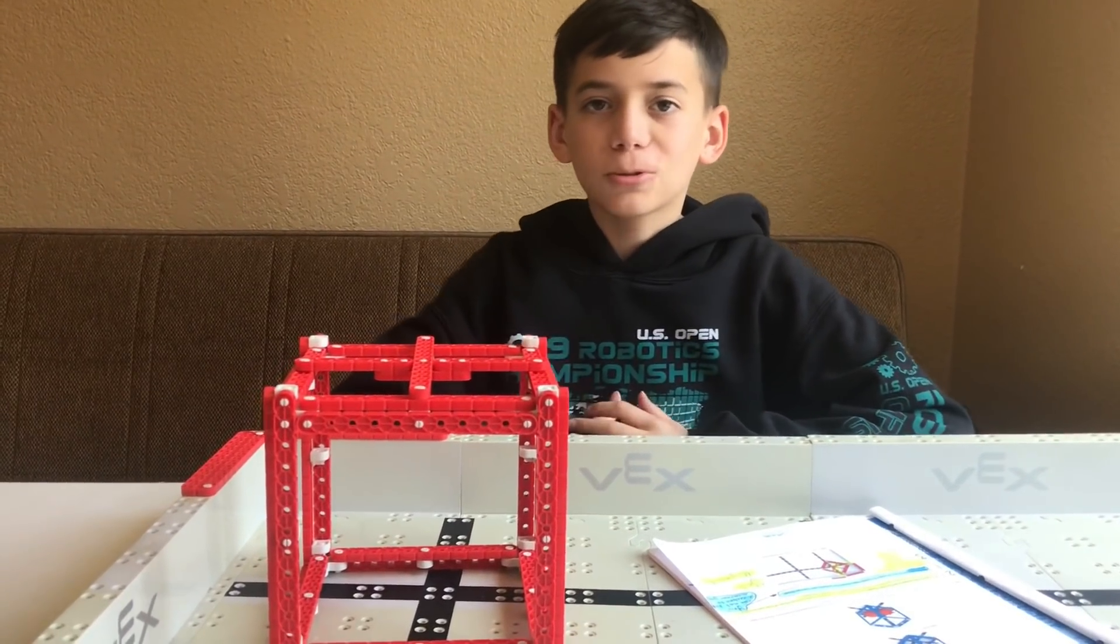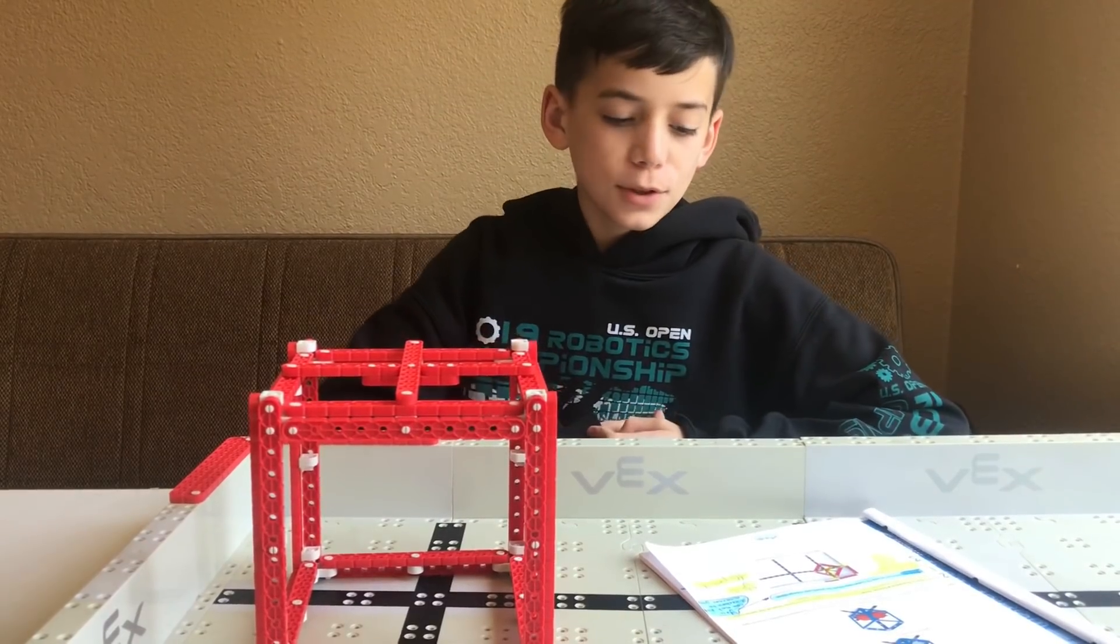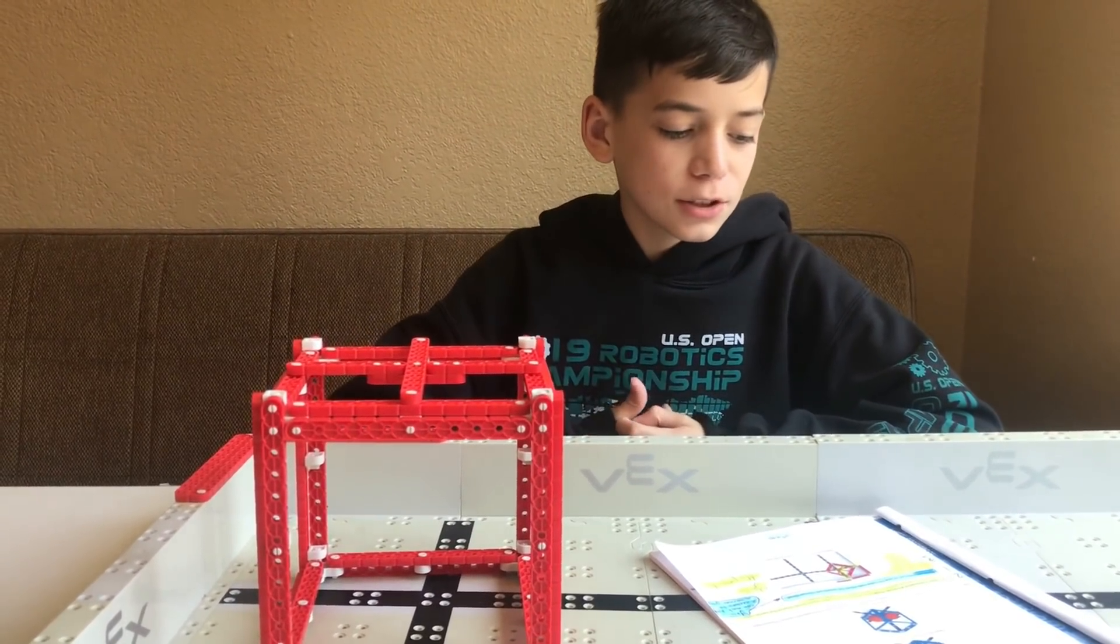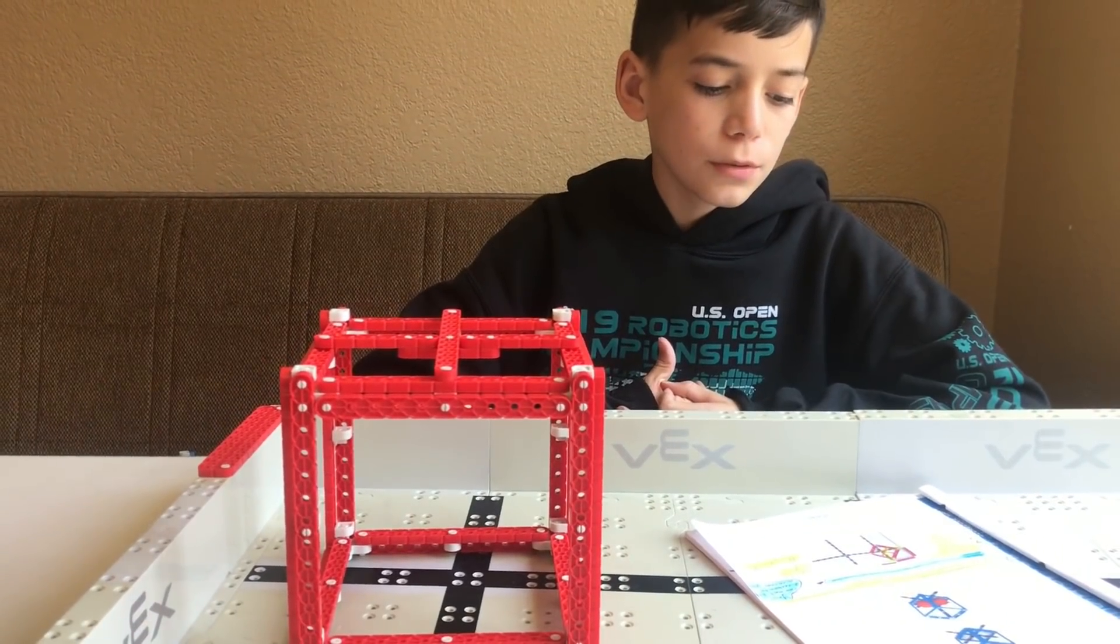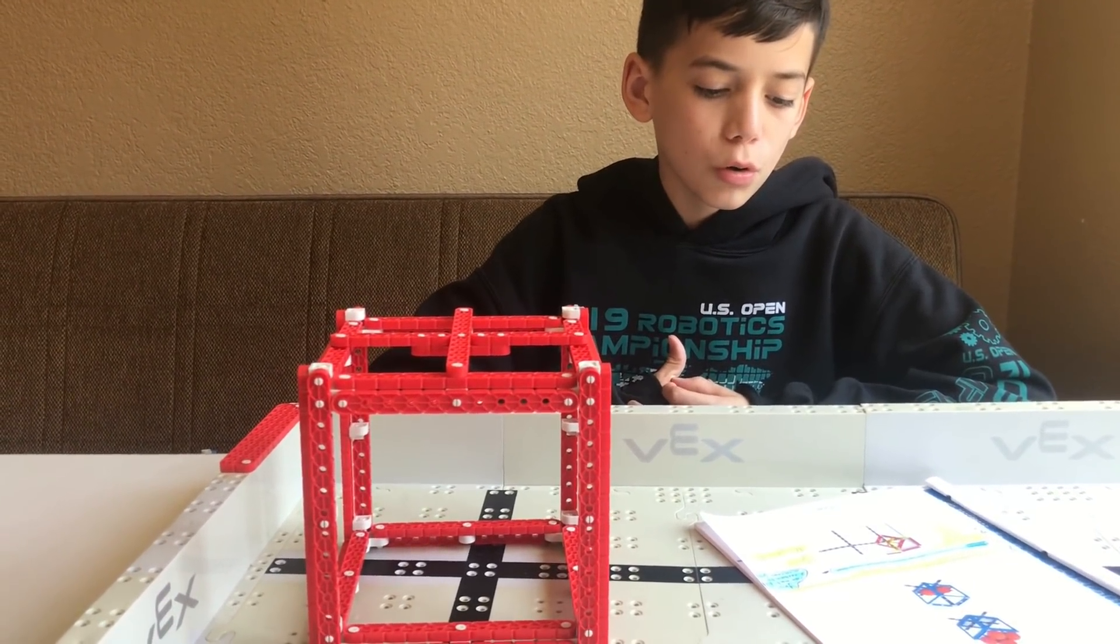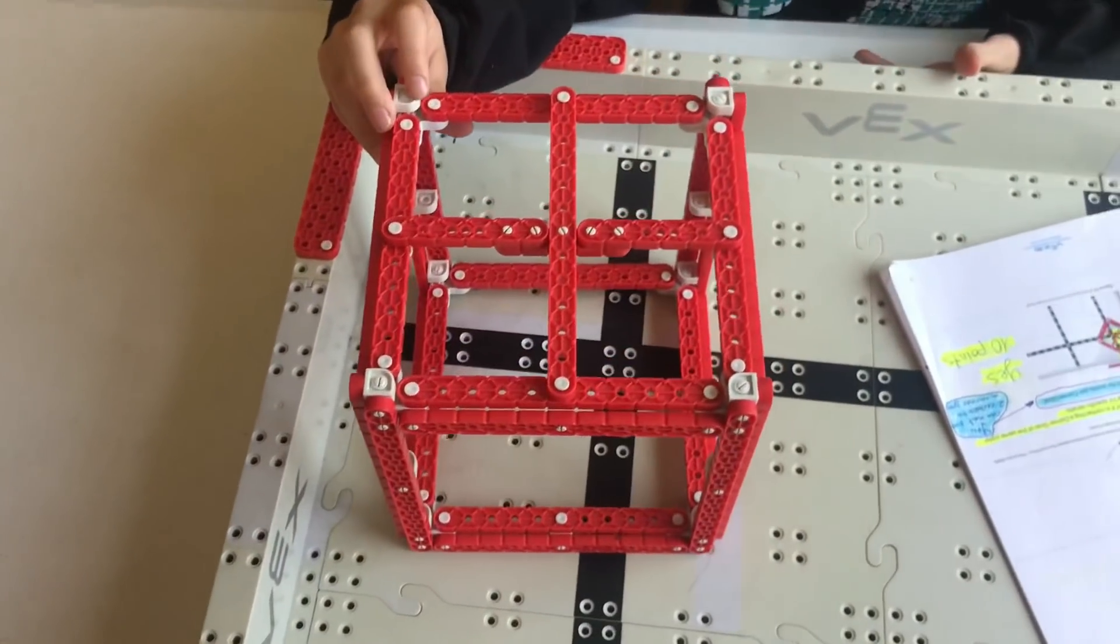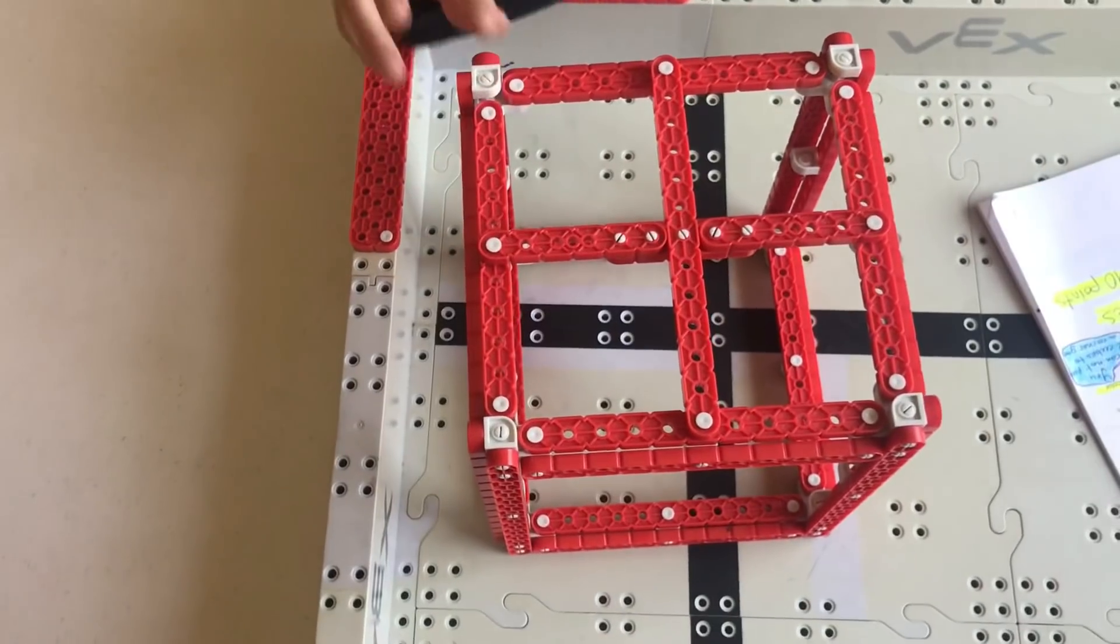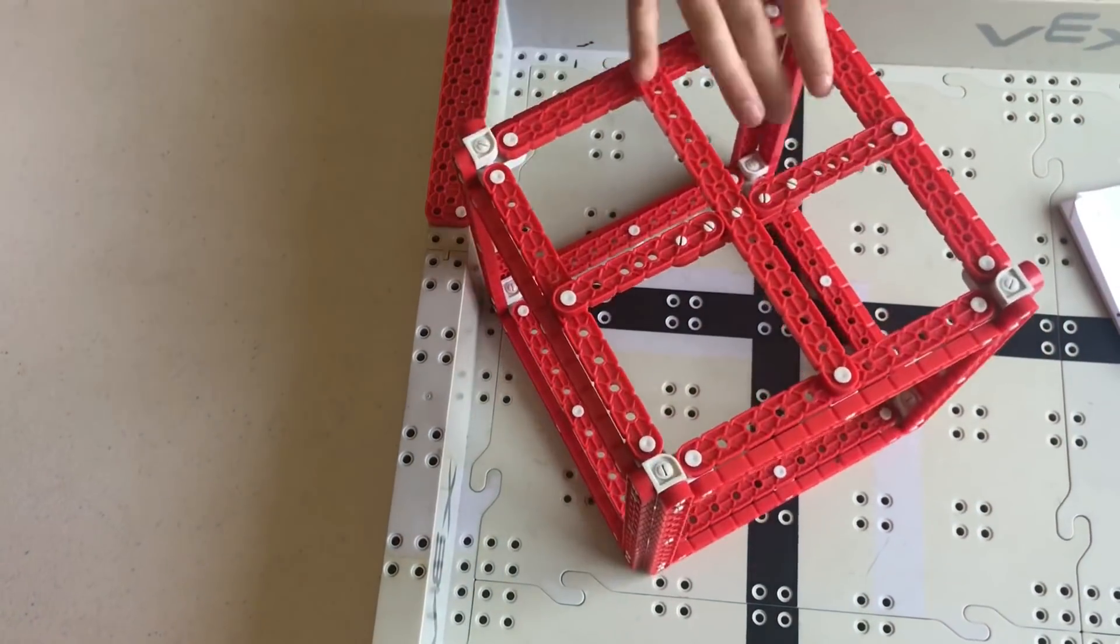All right guys, now we are going to be talking about the square corner goal. So on the game manual it says a cube is scored in a corner goal if any part of it is contacting a corner goal of the same color as the cube.